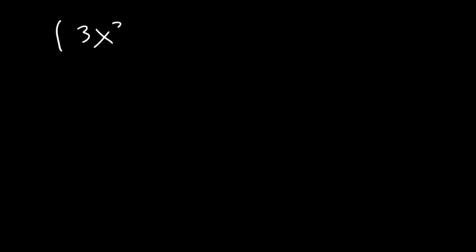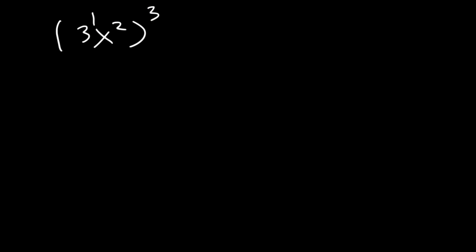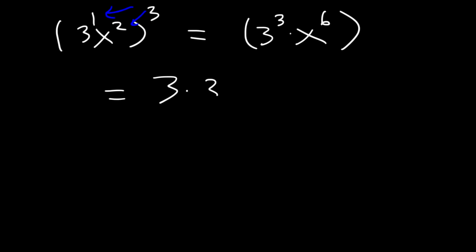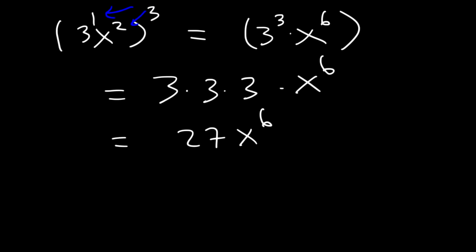What is the value of 3x squared raised to the 3rd power? Here, 3 is the same as 3 to the 1st. Whenever you raise one exponent to another, you multiply, and we need to distribute the outer 3 to both the 1 and the 2. So 3 times 1 is 3, and 2 times 3 is 6, giving us 3 to the 3rd times x to the 6th. 3 to the 3rd is 3 times 3 times 3: 3 times 3 is 9, and 9 times 3 is 27. So the final answer is 27x to the 6th power.